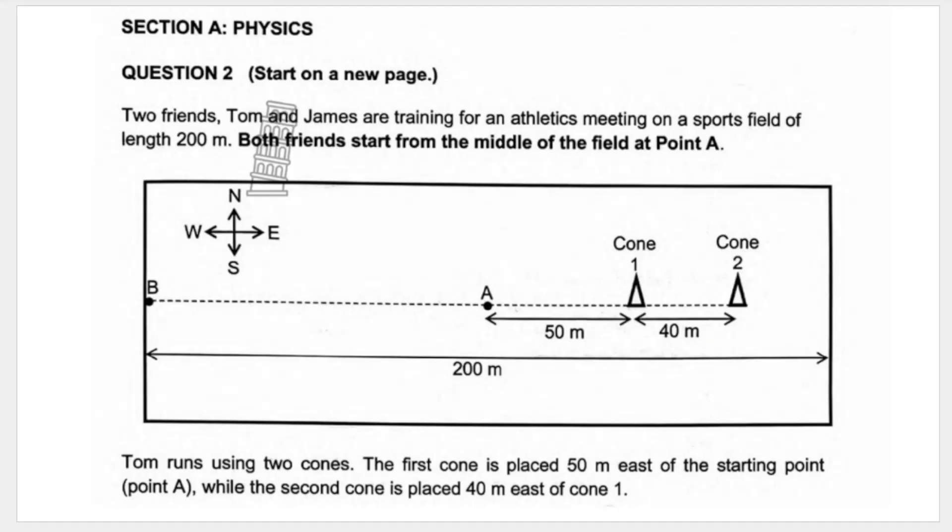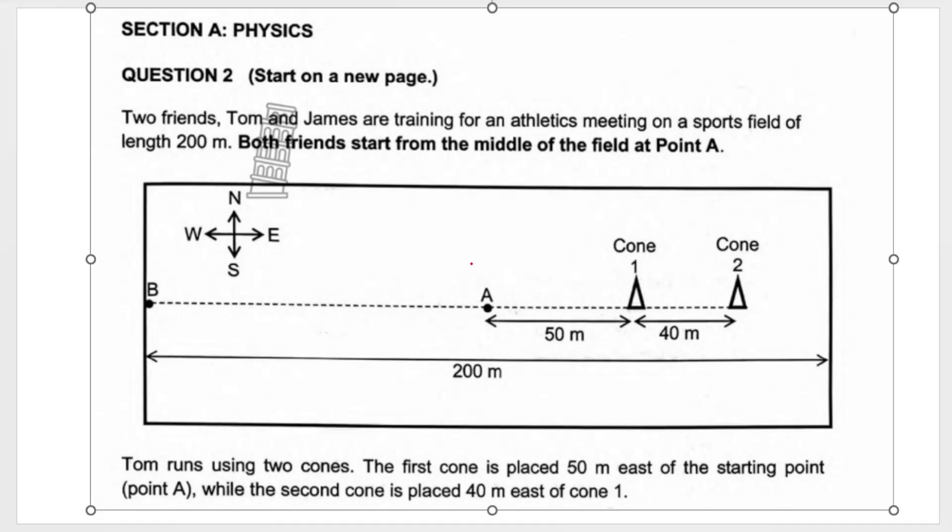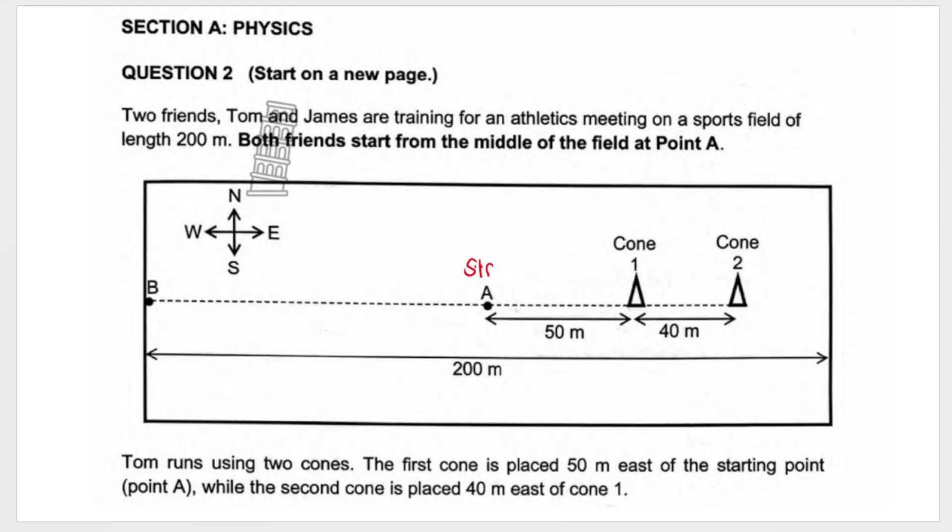The question says two friends, Tom and James, are training for an athletics meeting on a sports field. They give you the length of the sports field and both friends start from the middle of the field at point A. So this over here is the starting position. Tom runs using two cones, which they label on the diagram. The first cone is placed 50 meters east of the starting point. So here's the starting point. If you go to the east, here's cone one.